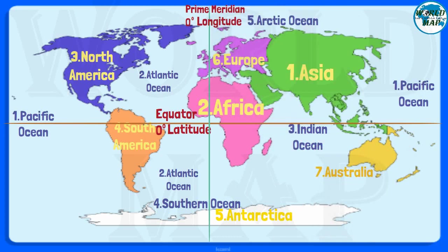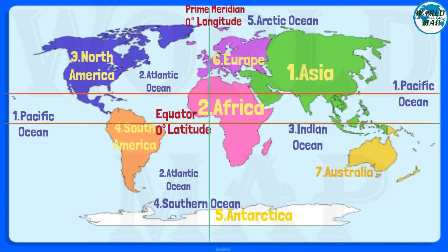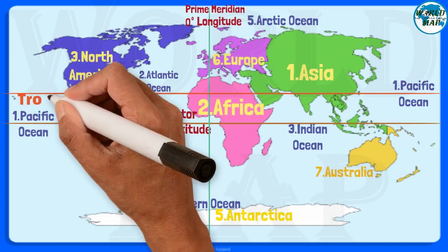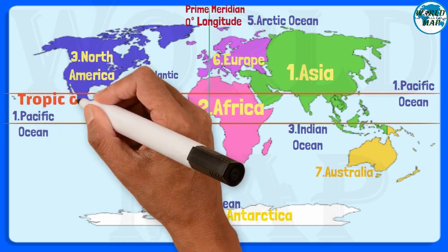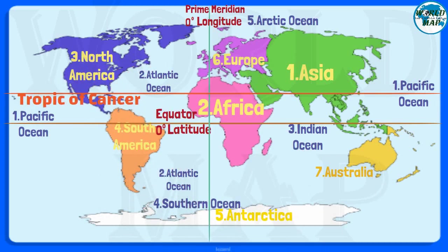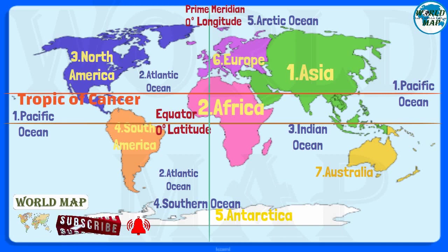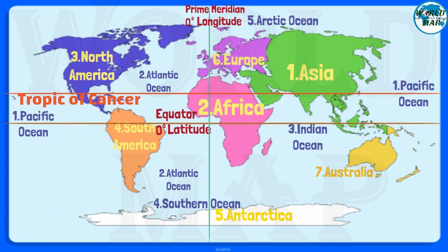Tropic of Cancer. The Tropic of Cancer, also known as the Northern Tropic, is the most northerly circle of latitude on Earth at which the Sun can be directly overhead. This occurs on the June solstice, when the northern hemisphere is tilted toward the Sun to its maximum extent.